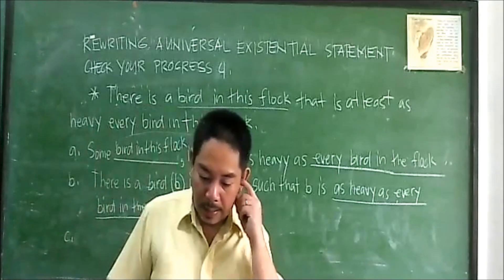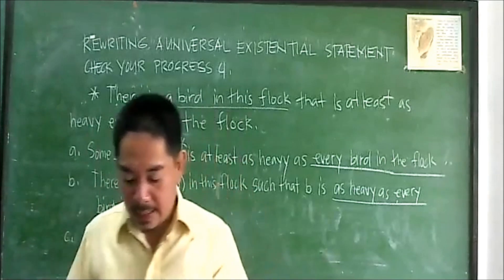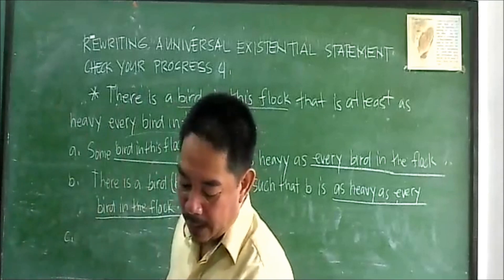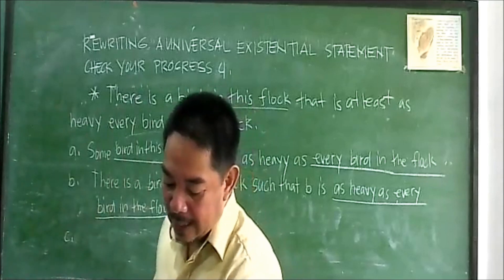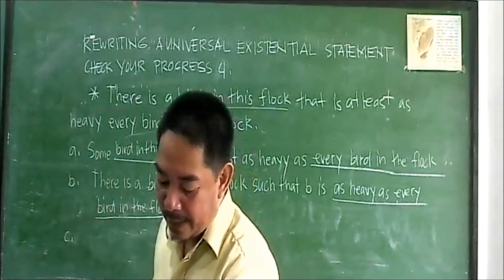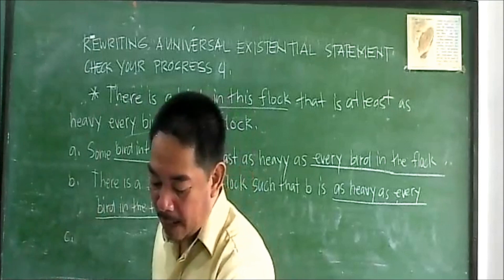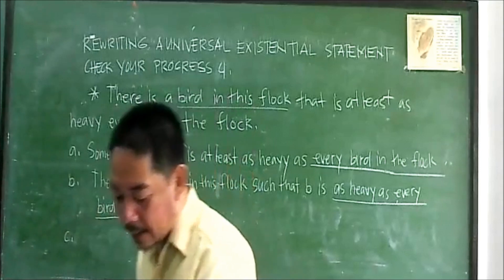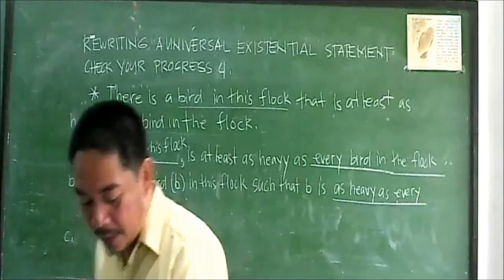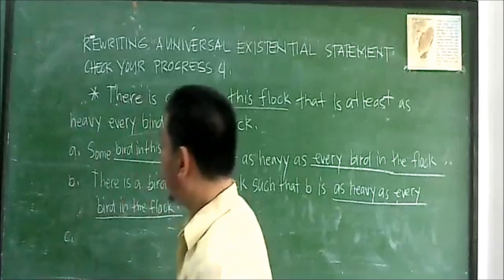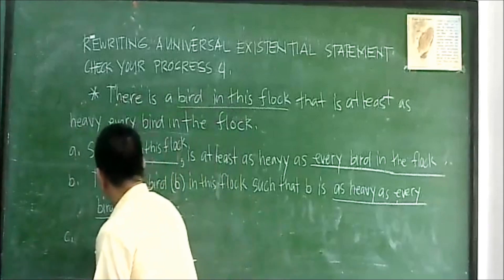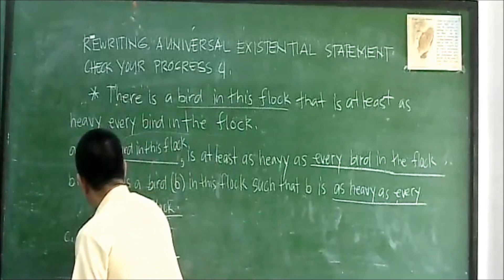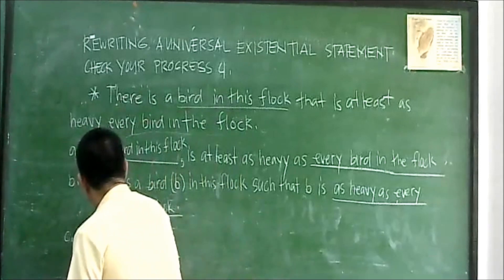There is a bird in this flock with a property that for every bird in the flock, B is blank. The bee is blank.